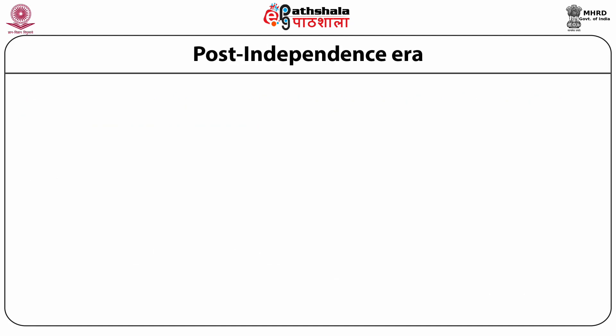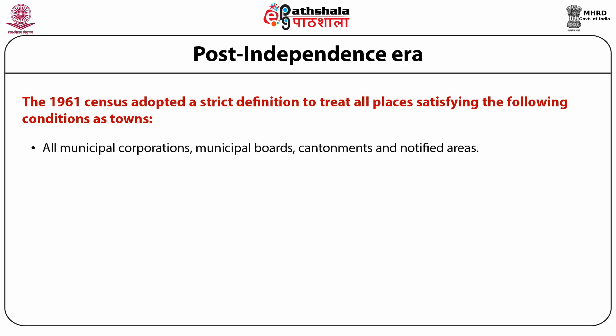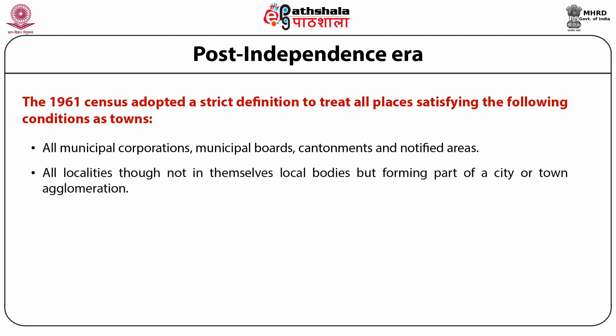In the post-independence era, the Census of India 1951 defined an urban settlement based on municipalities and the population of the area. Major changes were brought about in the definition of urban areas after independence. While the 1961 census marked the most thorough change in the definition of urban, the 1981 census saw some further modifications. The 1961 census adopted a strict definition to treat all places satisfying the following conditions as towns: all municipal corporations, municipal boards, cantonments and notified areas; all localities forming part of a city or town agglomeration.